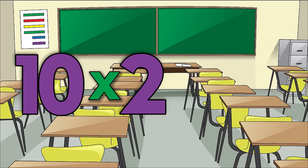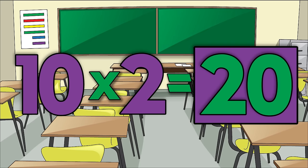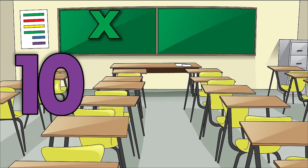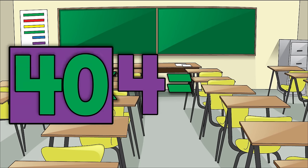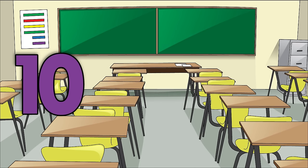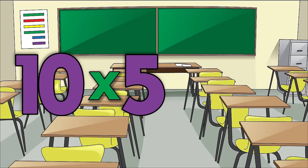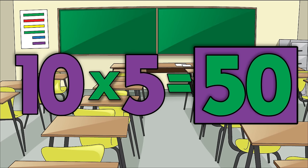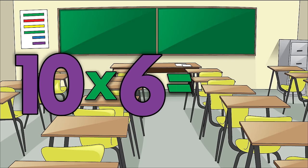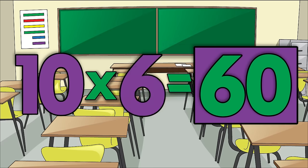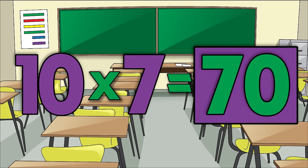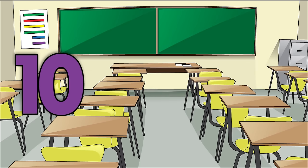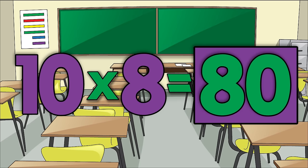Ten times two is twenty. Ten times three is thirty. Ten times four is forty. Ten times five is fifty. Ten times six is sixty.